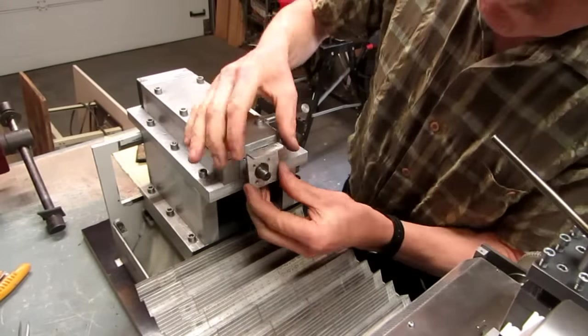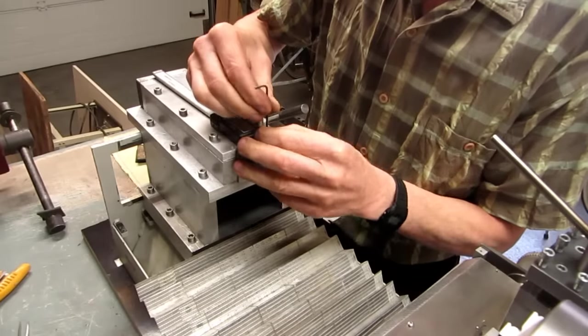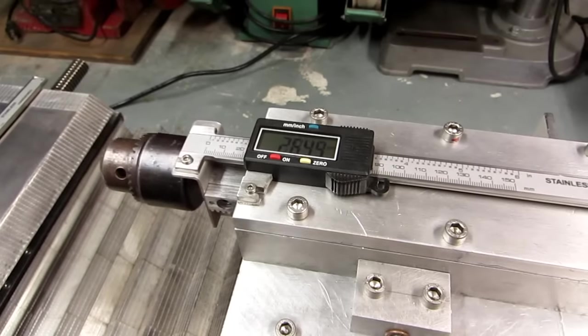For the tailstock caliper I mounted a bracket on the spindle bar. Then I fixed the caliper with two screws. You can now easily check the movement of the tailstock spindle.